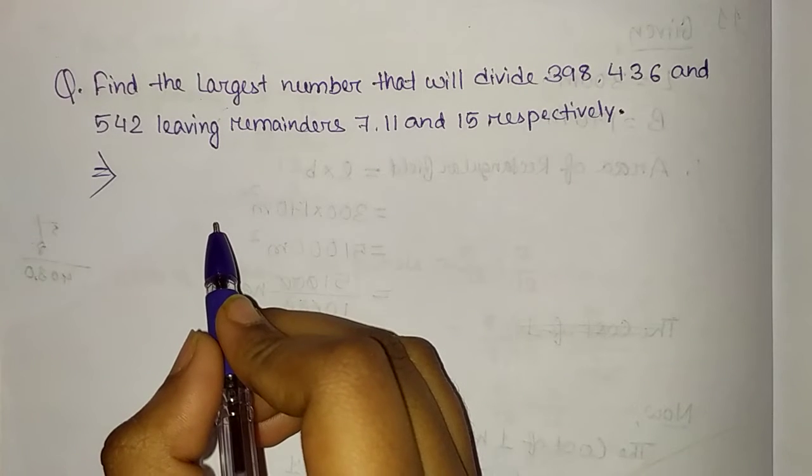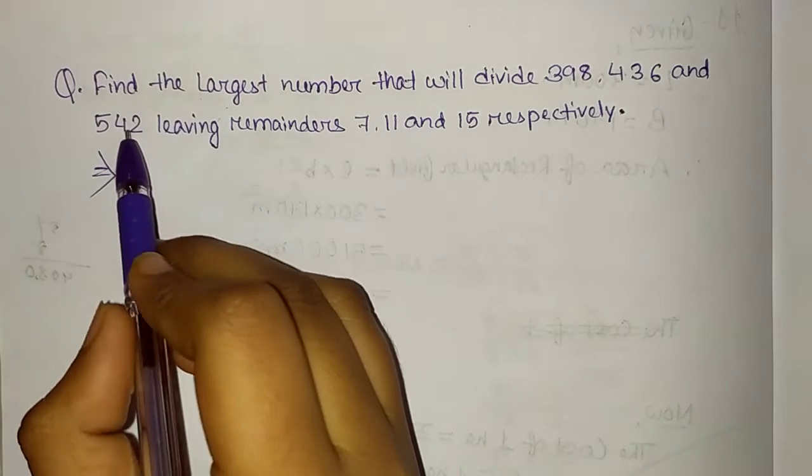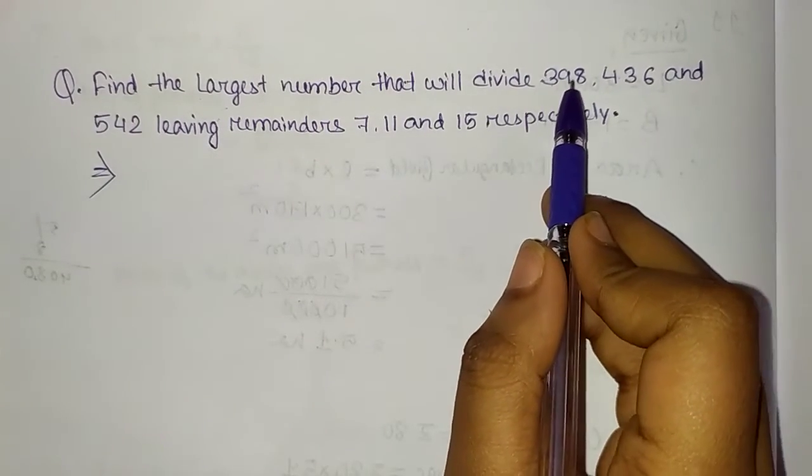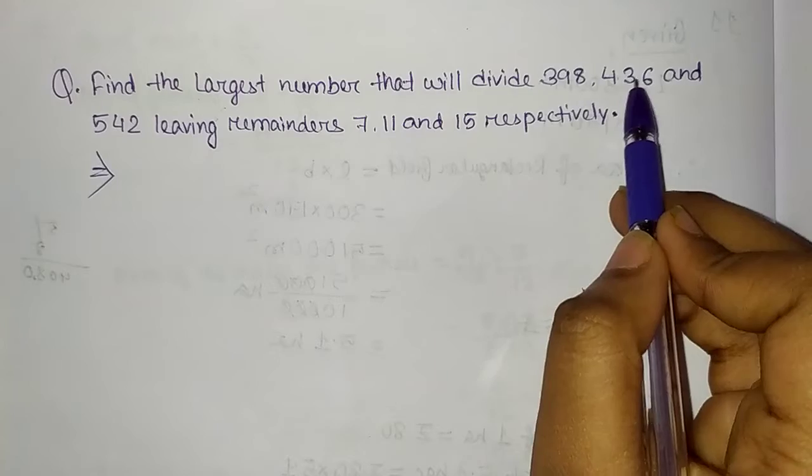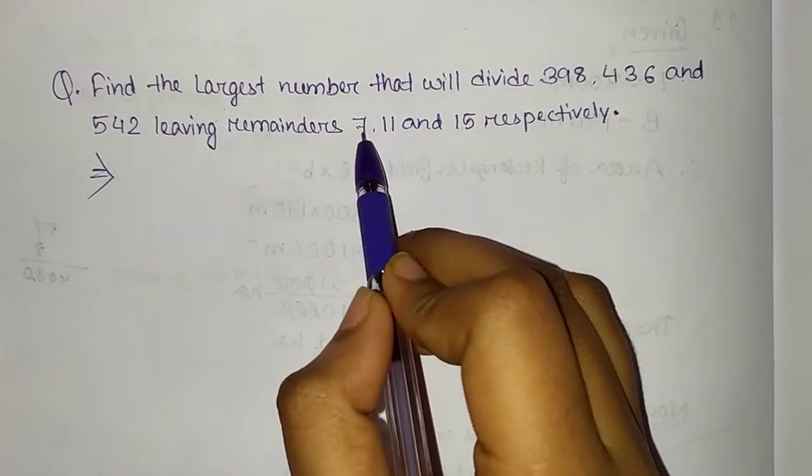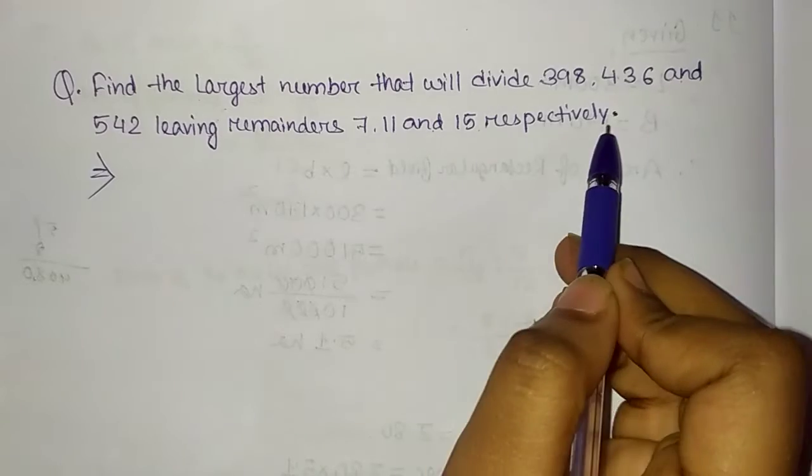Hi friends, today we will solve the most important question. The question is, find the largest number that will divide 398, 436 and 542, leaving remainders 7, 11 and 15 respectively.